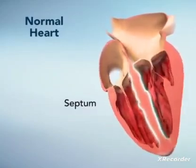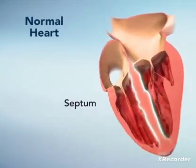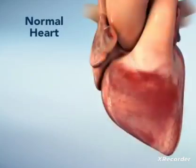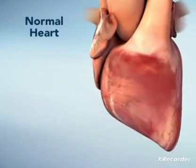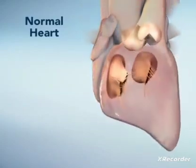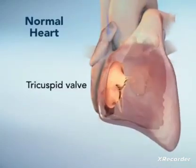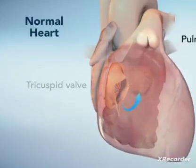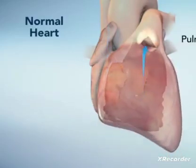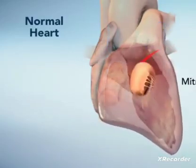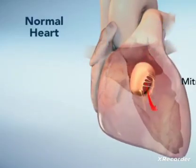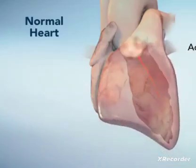A muscular wall called the septum divides the two sides of your heart. Your heart pumps blood in one direction through four valves: the tricuspid valve, pulmonary valve, mitral valve, and aortic valve.